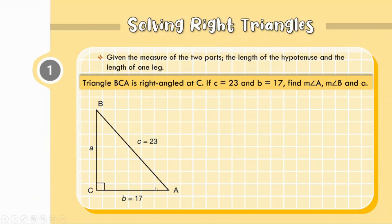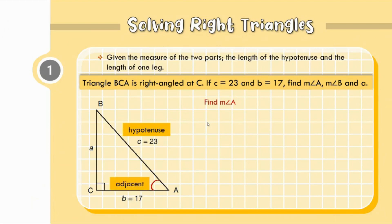We are asked to find the measure of angle A, measure of angle B, and the length of side A. Let us find first the measure of angle A. Using angle A as our reference angle, C which is equal to 23 is the hypotenuse, and 17 is the adjacent side with respect to angle A. Since we have adjacent and hypotenuse, we use cosine: cosine theta is equal to adjacent over hypotenuse.